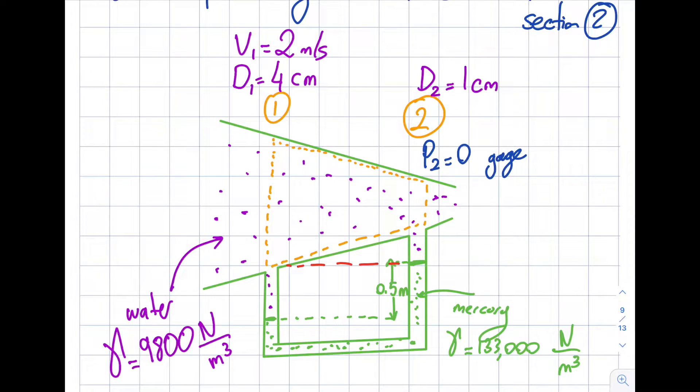And the rest of the system, which is this green section, is mercury.